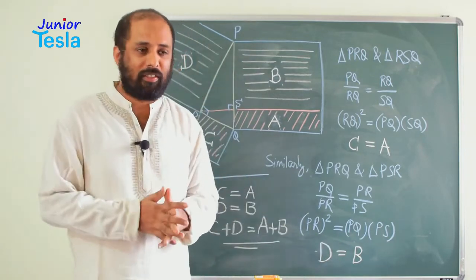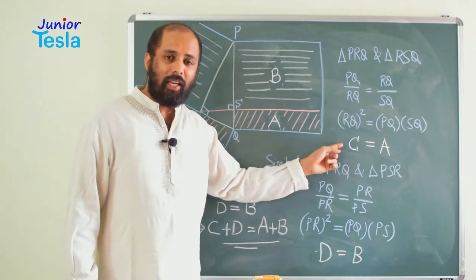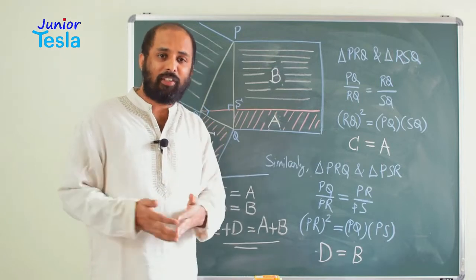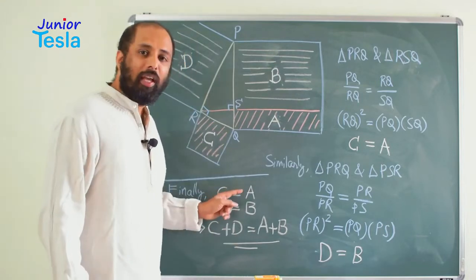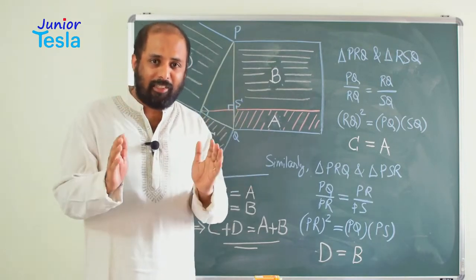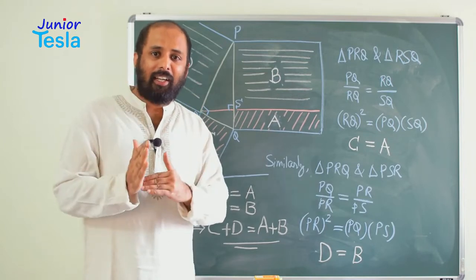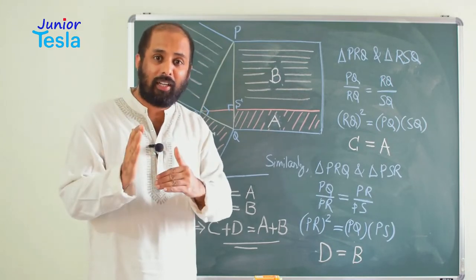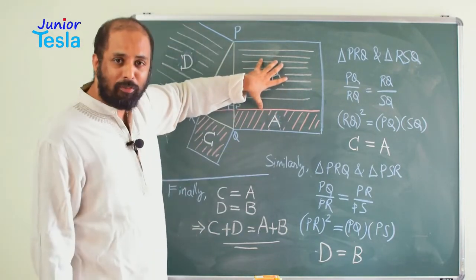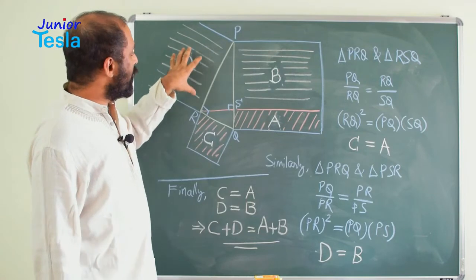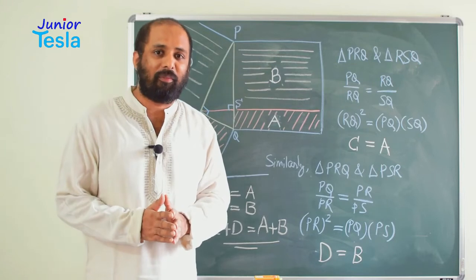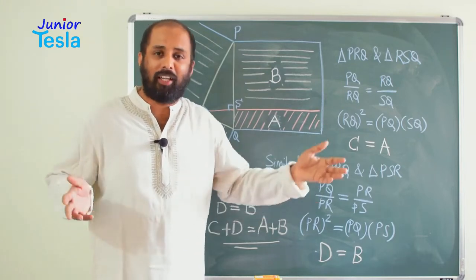So we got two equations. One says C equal to A, another is D equal to B. Now we are going to just add these two equations, that is C plus D is equal to A plus B. Now remember what Pythagoras or Bodhayana theorem says — the square on the hypotenuse is equal to sum of the squares on the other two sides. The square of the hypotenuse is A plus B, equal to sum of the squares on the other two sides, that is C and D. So A plus B equal to C plus D. And that is how we prove this Pythagoras theorem or Bodhayana theorem.